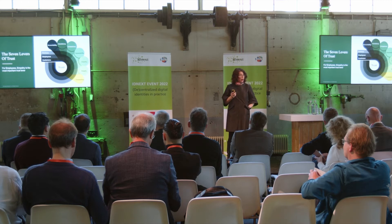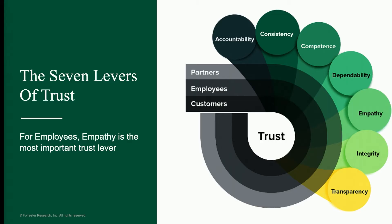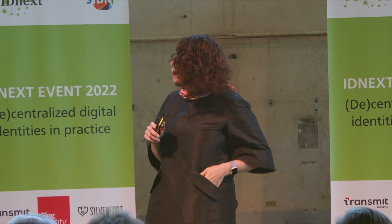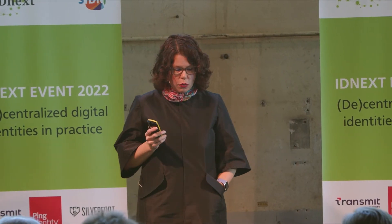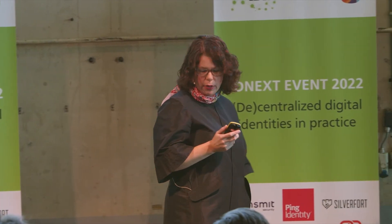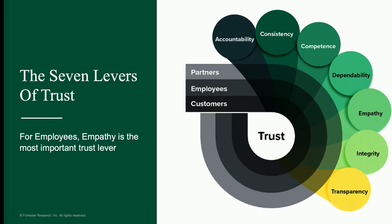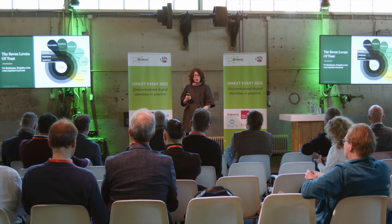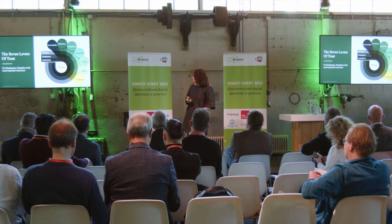Competence means you actually do a decent job of executing on the promises you make. If you've got terrific promises and you're consistent about them but don't actually apply them, that's not going to help you with your employees or customers. You've got dependability — can I depend on you to do those things consistently and inform me about when things change? These levers apply to all different kinds of actors, whether it's your partners, your employees, or your customers.